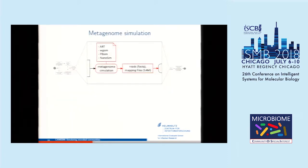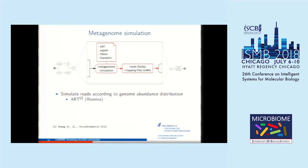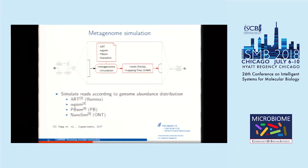Given this genome abundance distribution — genomes and their abundances — we start the real metagenome simulation where you get the reads for your community. Since we didn't want to reinvent the wheel, we decided to use existing read simulators: ART for Illumina data, WGSIM and PacBioSim for PacBio data, and NanoSim for Oxford Nanopore. Should new sequencing technologies or read simulators be developed, it's entirely possible to include them in KamiSim later on.